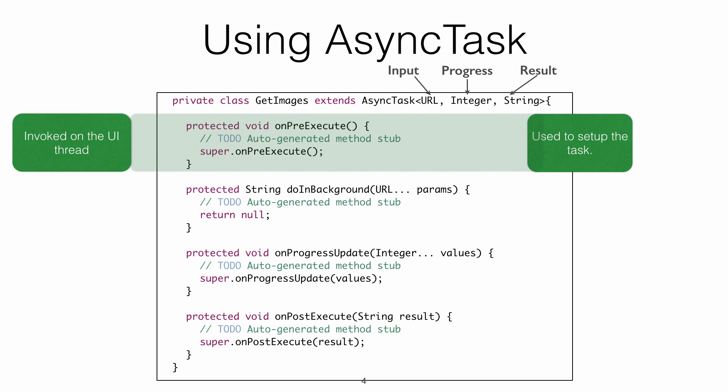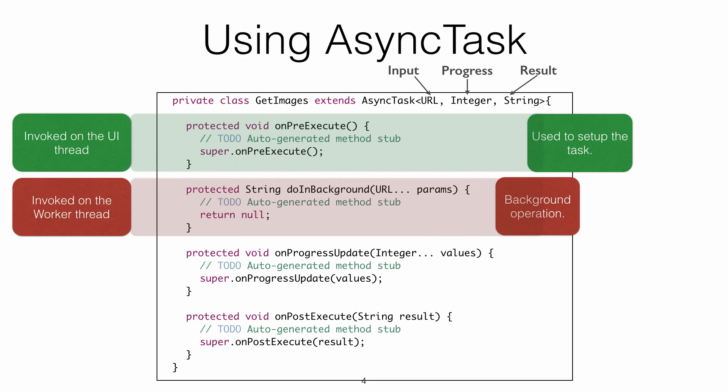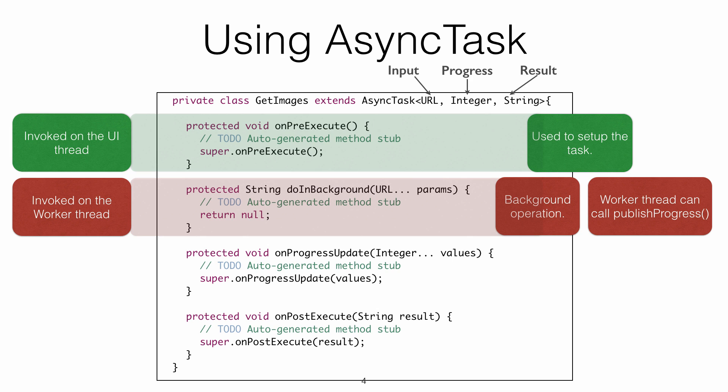doInBackground is essentially the run method — it is the background operation. From within it, you can call publishProgress to send a message to the main thread. That message is caught by the onProgressUpdate method, which receives the progress sent by the worker.